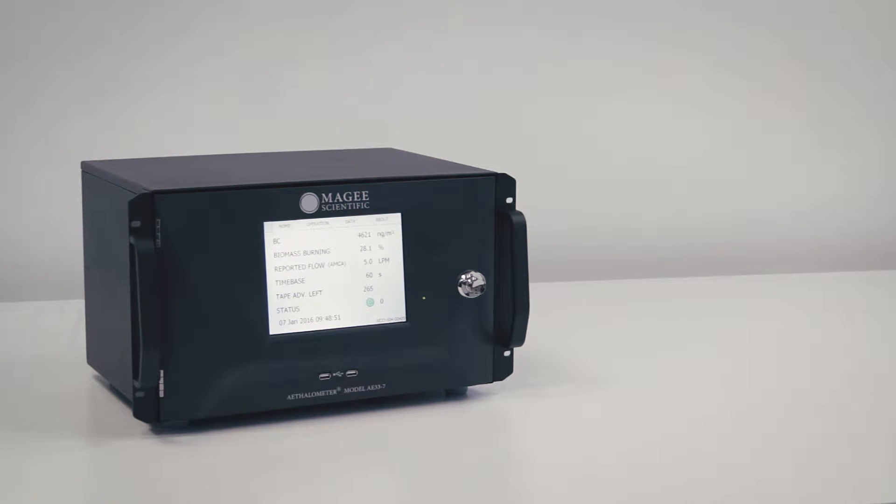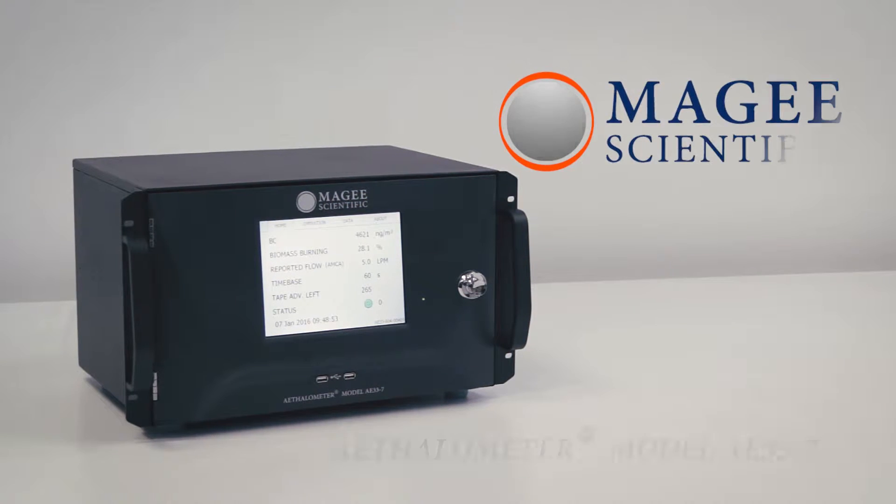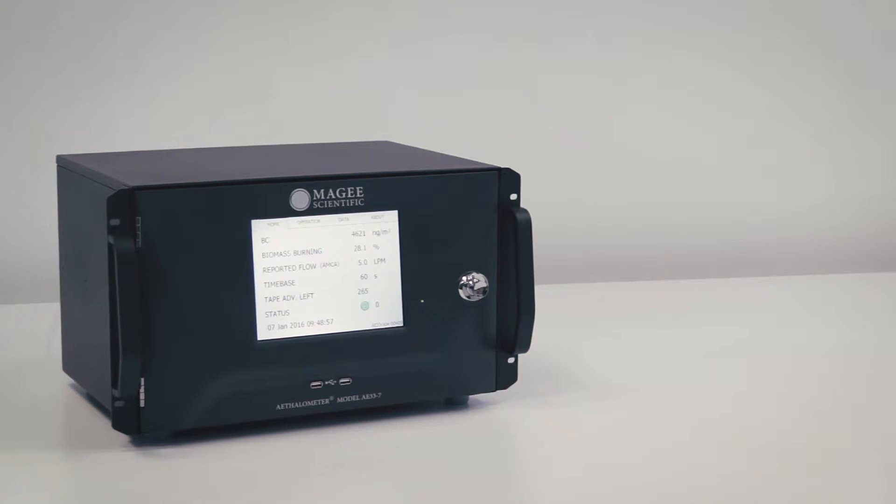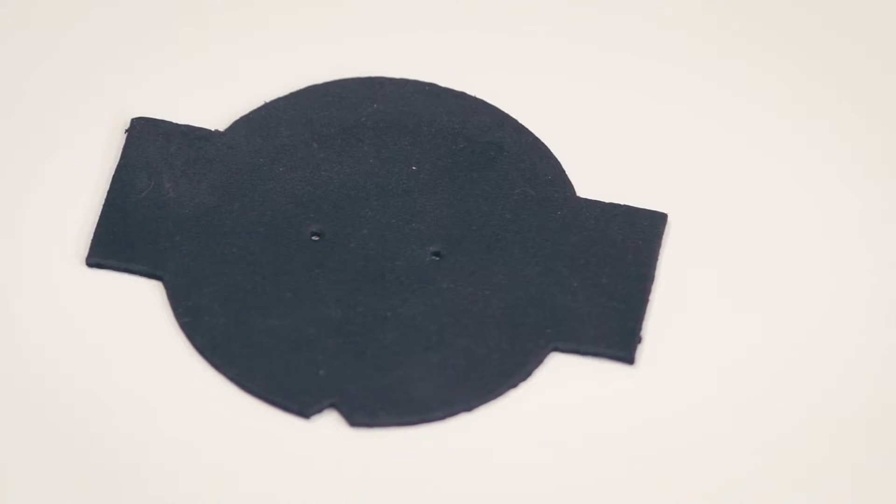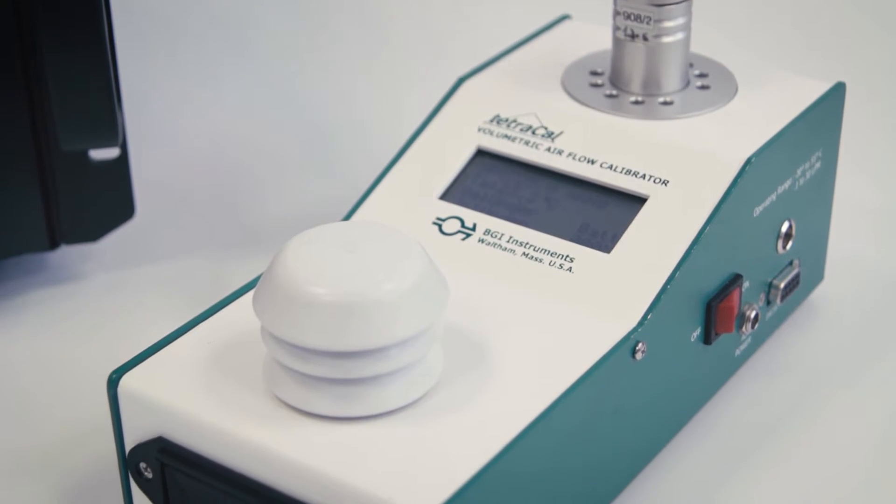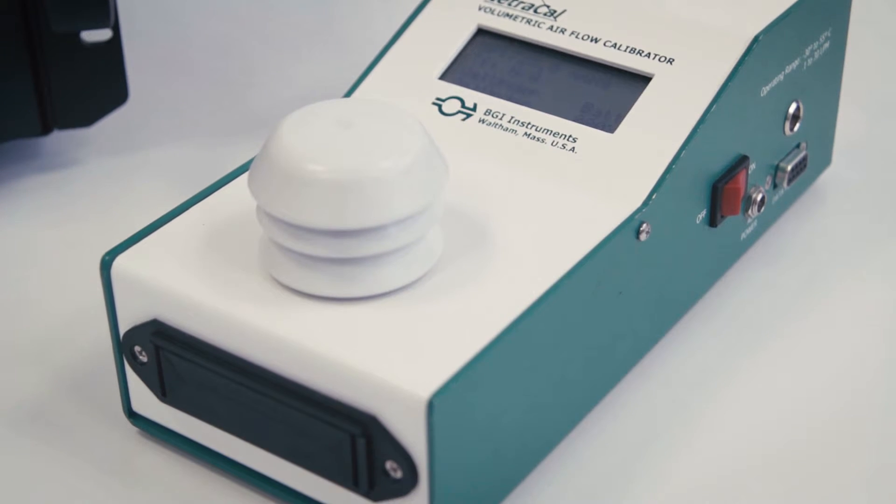This video shows the operations of the flow calibration procedure for the model AE-33 ethylometer. For this test, you will need the flow calibration rubber pad, which is a standard accessory of the AE-33, and an air mass flow meter, which you can connect externally to the sample inlet port.